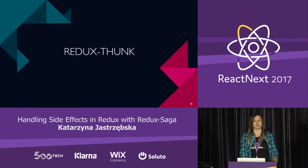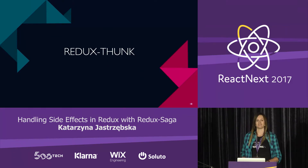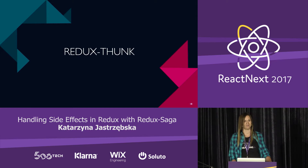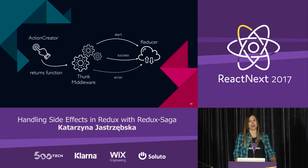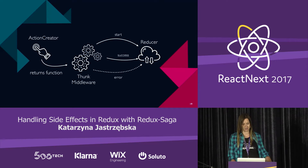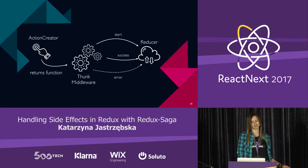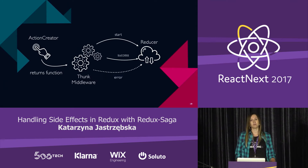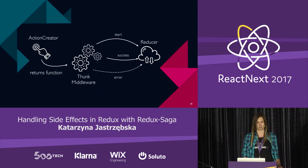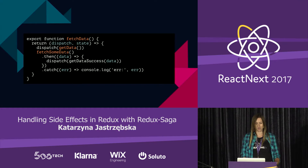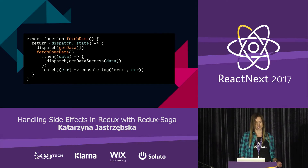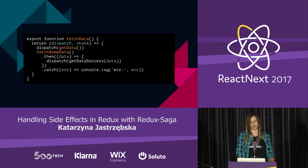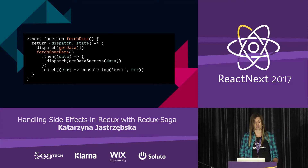It's pretty easy. Thanks to Redux Thunk, there is an action creator which can return a function. Thanks to the Thunk middleware, this function is operated by that middleware. Inside this function — which is essentially a callback — we can do some data fetching with, for example, Promises, and then dispatch an action on success, or catch an error and dispatch an error action.